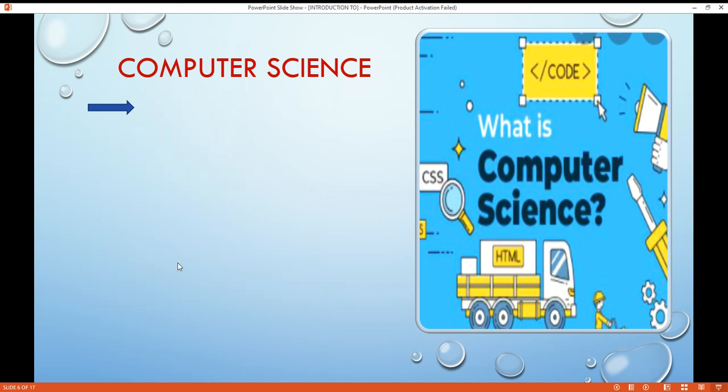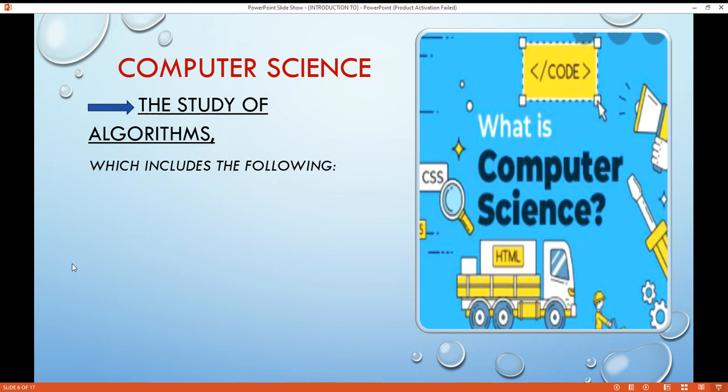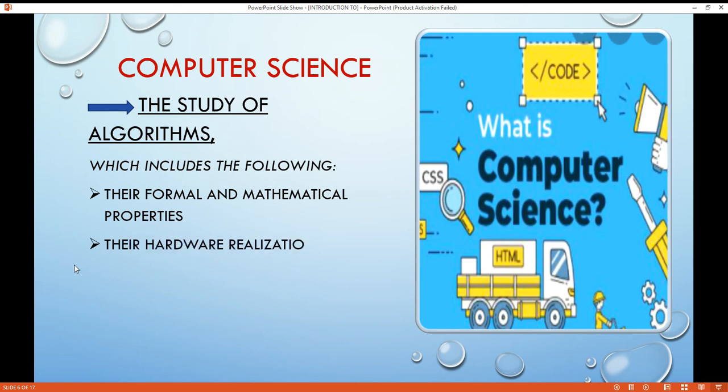Now, the true meaning, the definition of computer science. Computer science is the study of algorithms, which includes the following: their formal and mathematical properties, their hardware realizations, their linguistic realizations, and their applications.